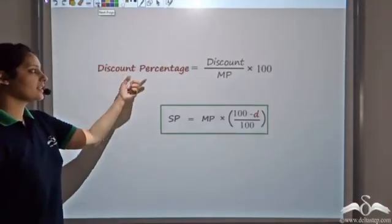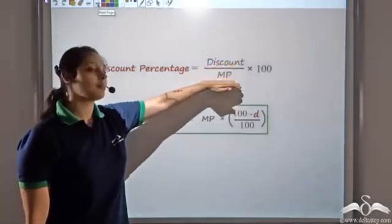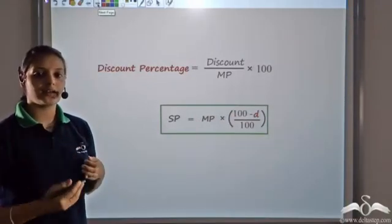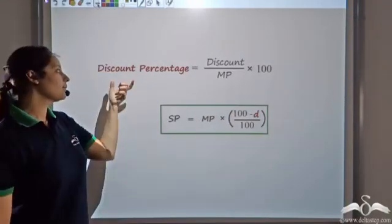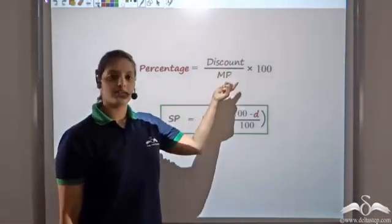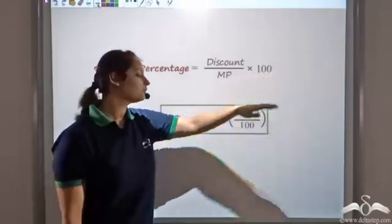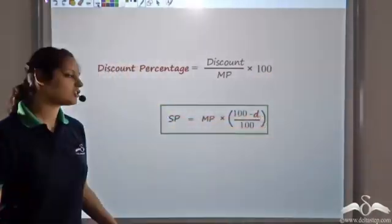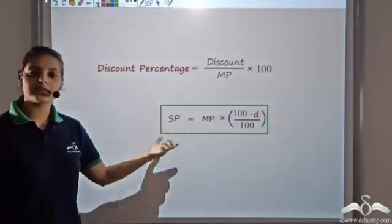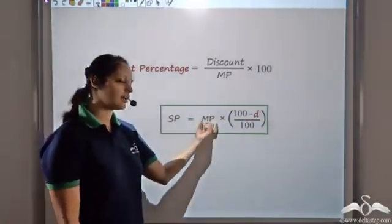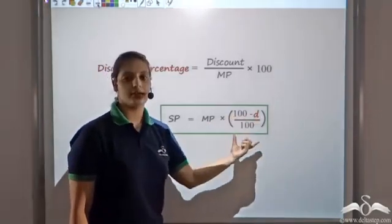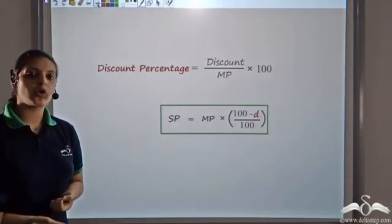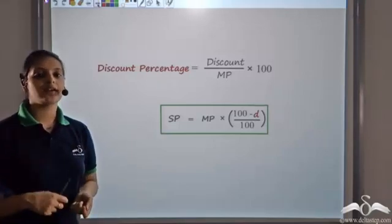To summarize: Discount% = Discount / Marked Price × 100. For profit% and loss%, we divide by cost price — but for discount, always use the marked price. When you know the marked price and discount percentage D, you can find the selling price using: SP = MP × (100 − D) / 100. Remember these two formulas to find discount percentage or selling price when marked price and discount percentage are given.